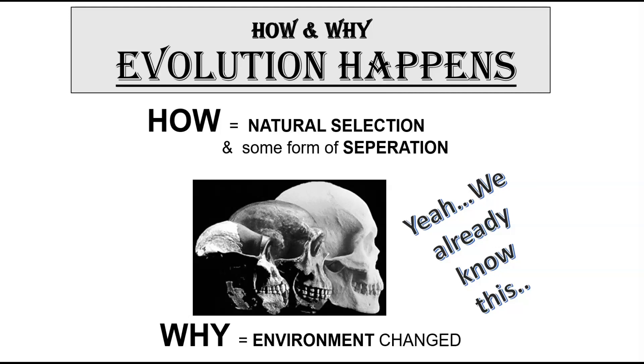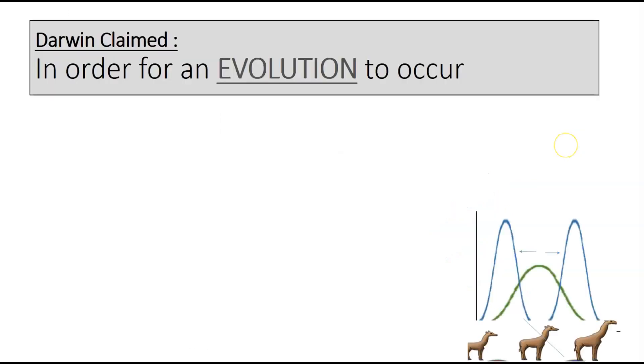In order for evolution to occur - the big change that we're talking about - a few things need to line up. Evolution doesn't always occur, but when certain situations fall in line and they're all present at the right time, big changes can happen.